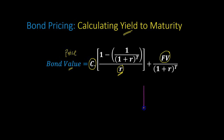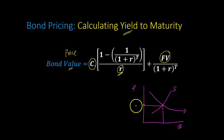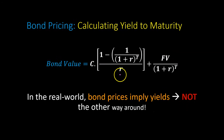Now, it turns out that the real world doesn't quite work like this. Rather, what happens is that there is an active bond market in which bonds are being bought and sold. There are prices of bonds established based on demand and supply. What we get to observe are the prices of bonds given certain coupon rates and face values. What is unknown is the investor's required rate of return, or the yield to maturity.